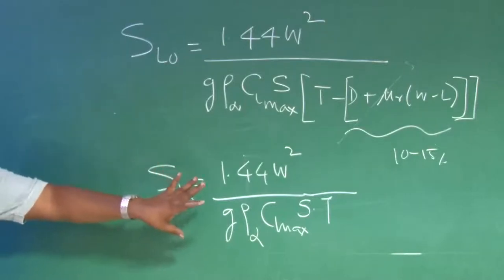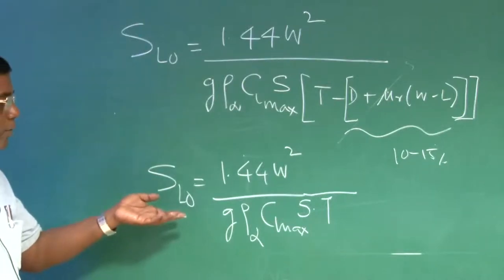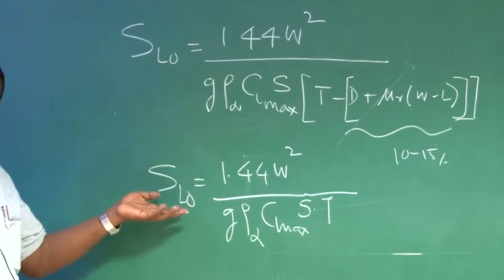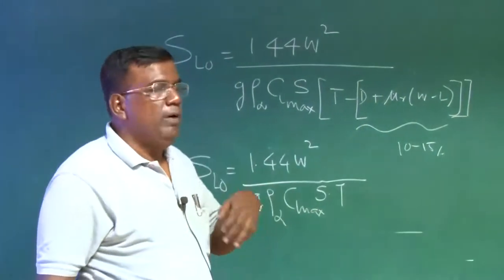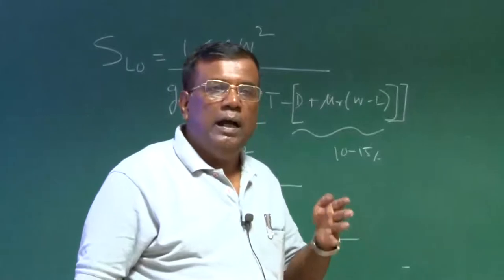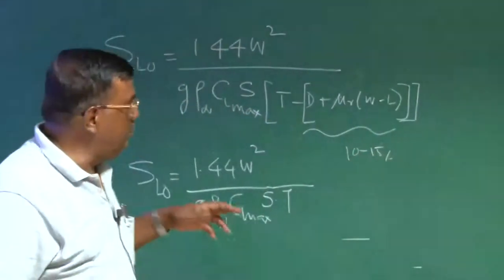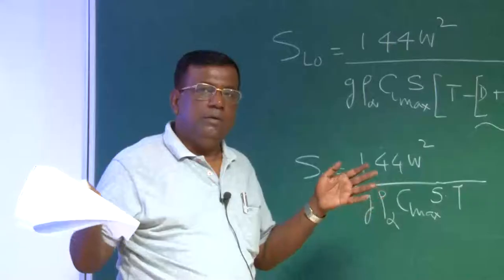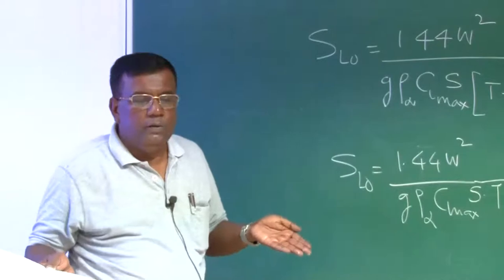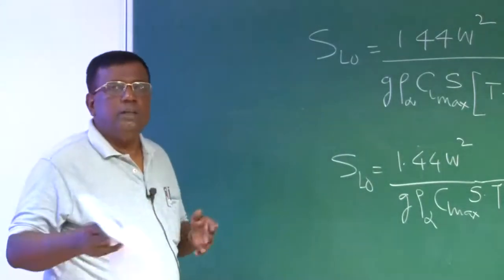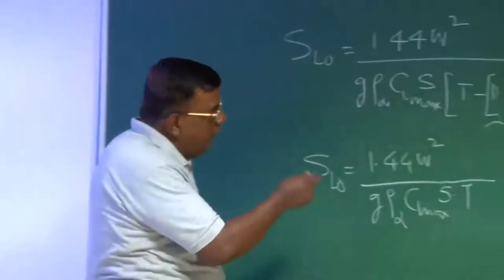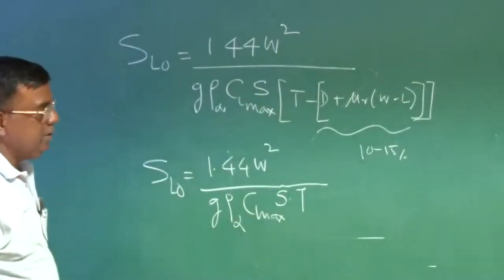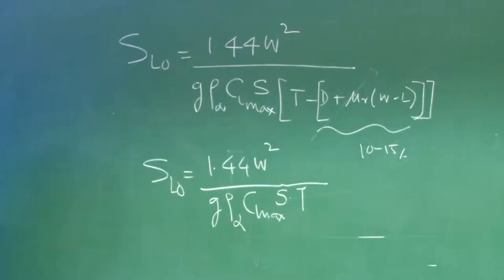This is a compact expression, but I would like to see where is wing loading hiding here and where is T by W thrust loading hiding here, because we have agreed when I go for a takeoff, if I have more thrust or more thrust loading, I will be able to accelerate faster. So S lift off has to be a function of T by W. If W by S is small, so wing area is large, it will generate lift much earlier than if the area was less. So W by S also plays a role.